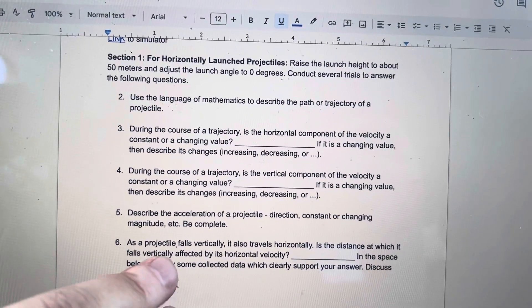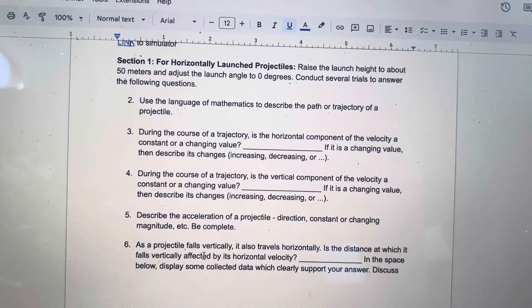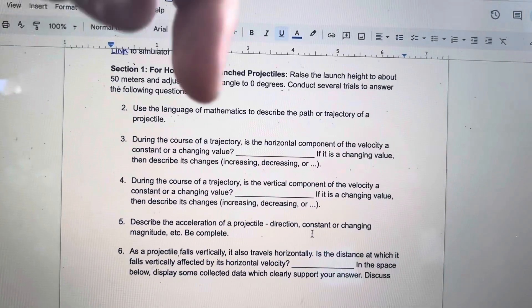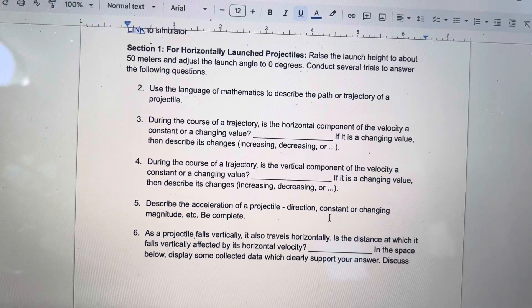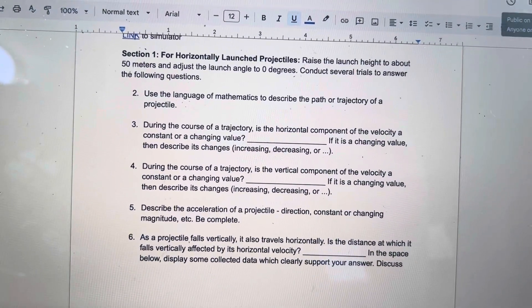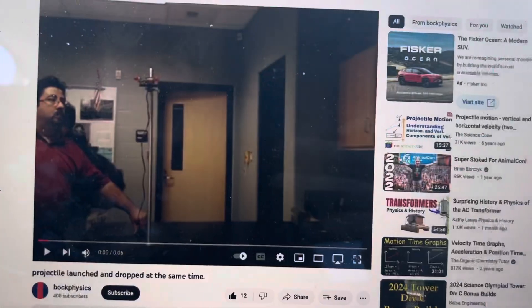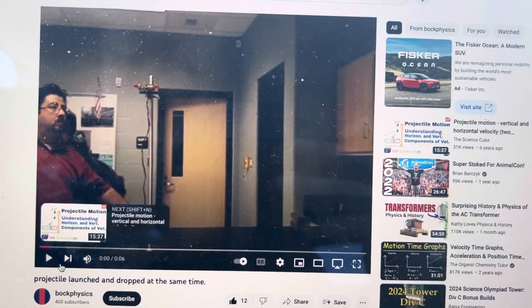Is the distance that it falls downwards affected by the horizontal velocity? Some people have the idea that when things are moving horizontally they fall slower.